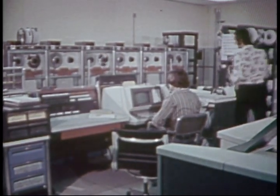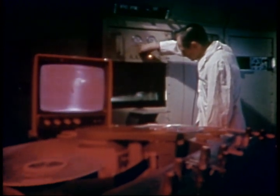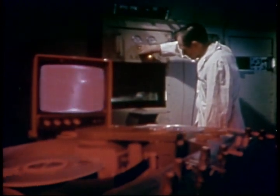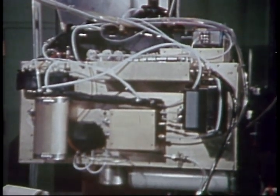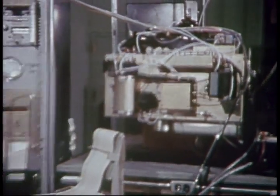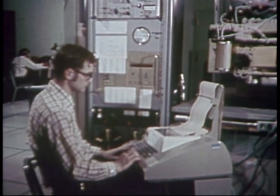As each cause is understood, the knowledge is used to improve the mathematical equations used for prediction and further study of the weather. For the next few minutes, we'll visit NASA laboratories where work is being done on all three scales. One of the major efforts at the microphysical scale is learning what happens in clouds. This cloud physics chamber devised by the Marshall Space Flight Center will go into space on the shuttle. The experiment is designed to help scientists understand how tiny water particles form into rain, snow, and hail. Knowing how raindrops are formed will help our understanding of what causes them to occur.